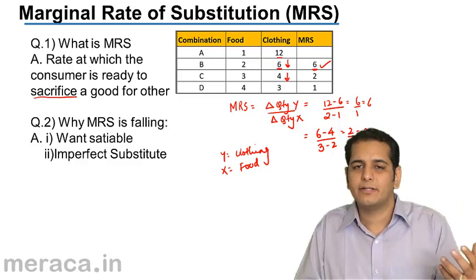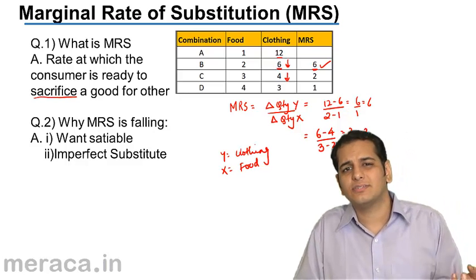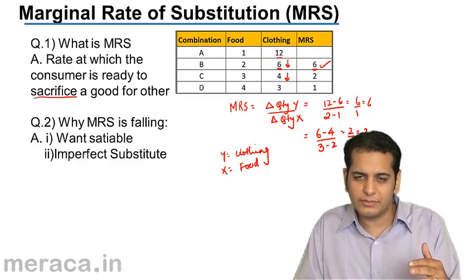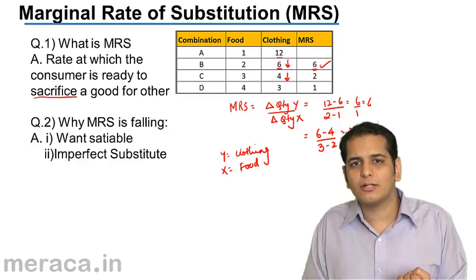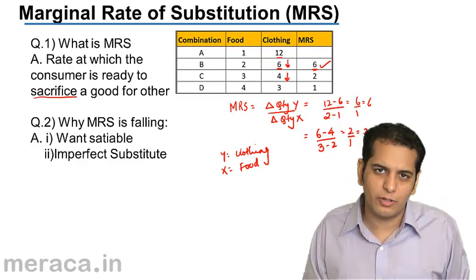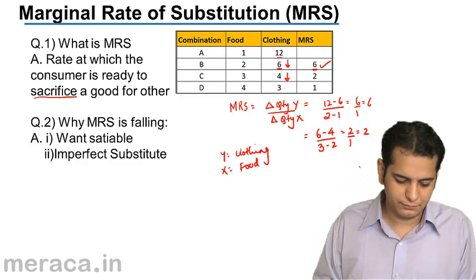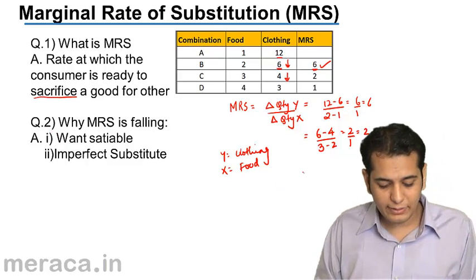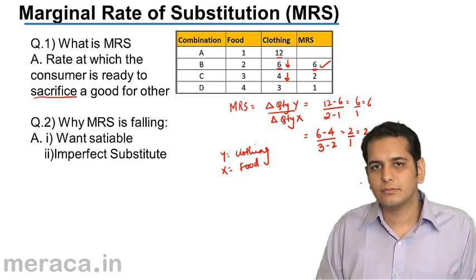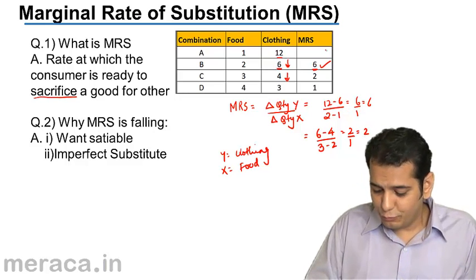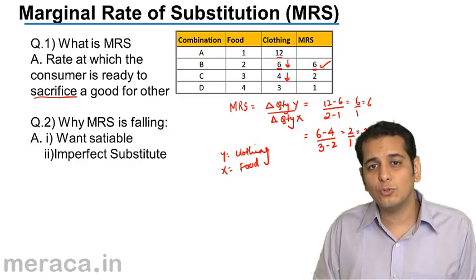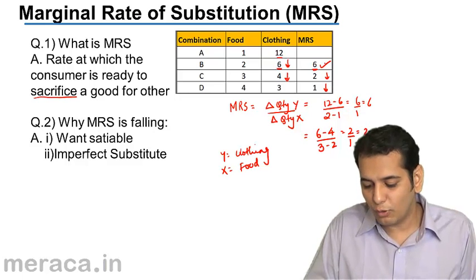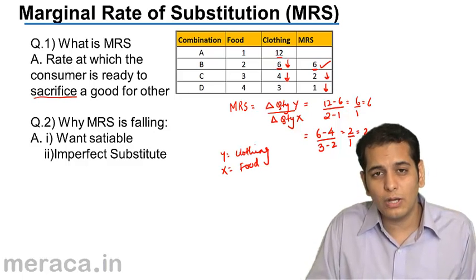This is how we calculate MRS — it is nothing but the rate at which the consumer is ready to sacrifice or give away one product for some other product. Now, the second question is why is MRS falling? If you notice closely in the schedule, the MRS is falling. It has fallen from 6 to 2 and from 2 to 1.